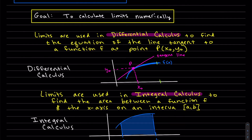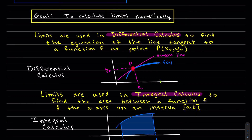Our goal is to calculate limits numerically in this section. A quick overview of what limits are used for: limits are used in differential calculus to find the equation of the tangent line to a function f at the point P, which is what I have pictured here. This pink line — now red — is our tangent line to f(x). This is called differential calculus.